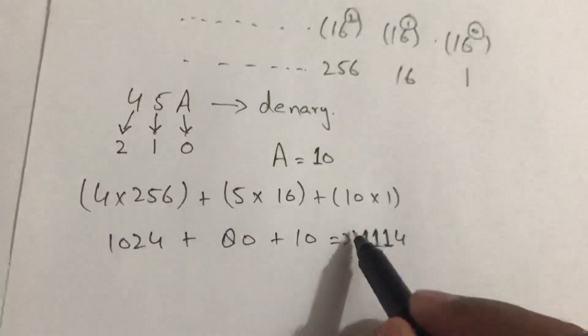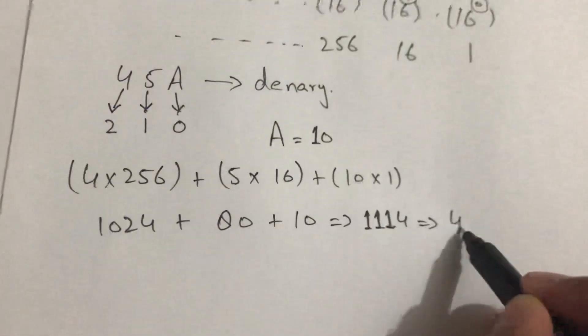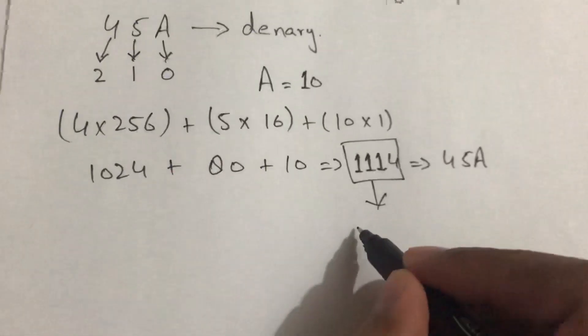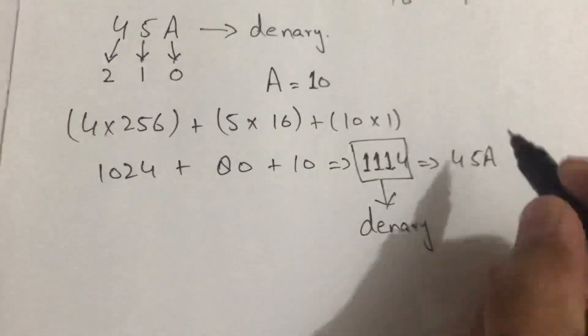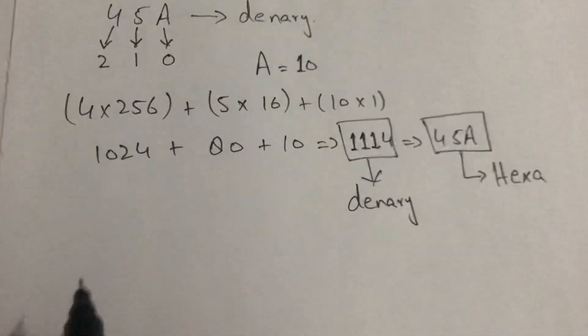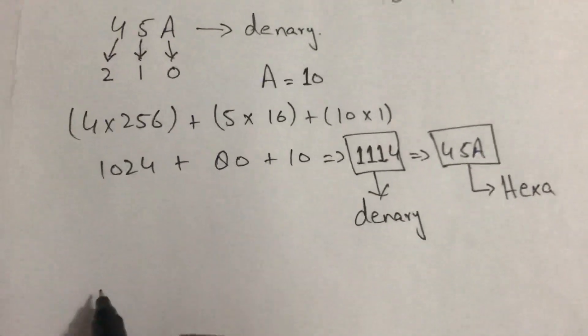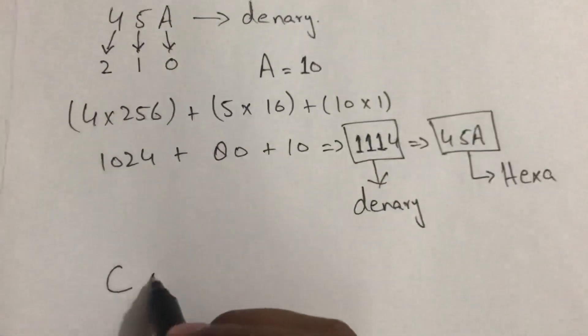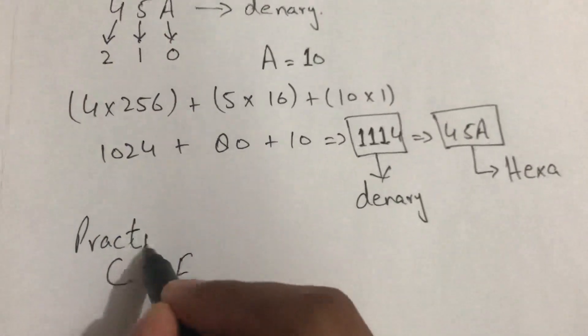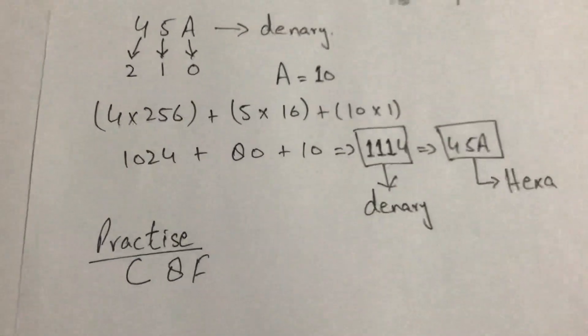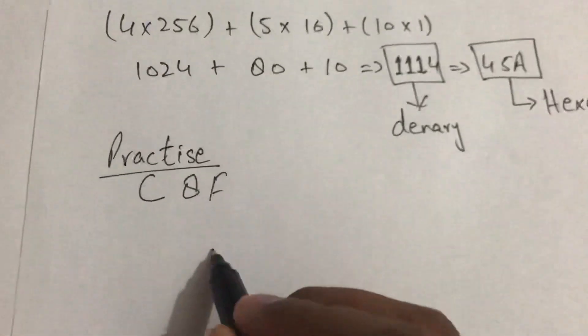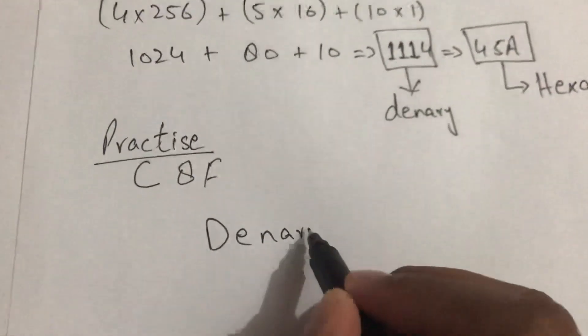We have converted, which is equivalent to 45A hexadecimal value. This is our denary and this is hexa. So for your practice, you have to solve C8F.